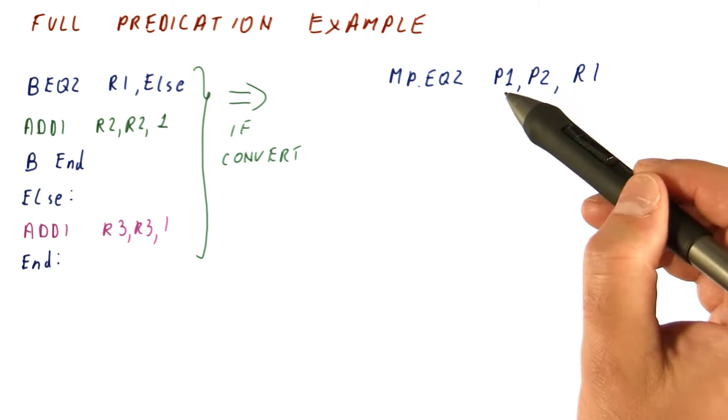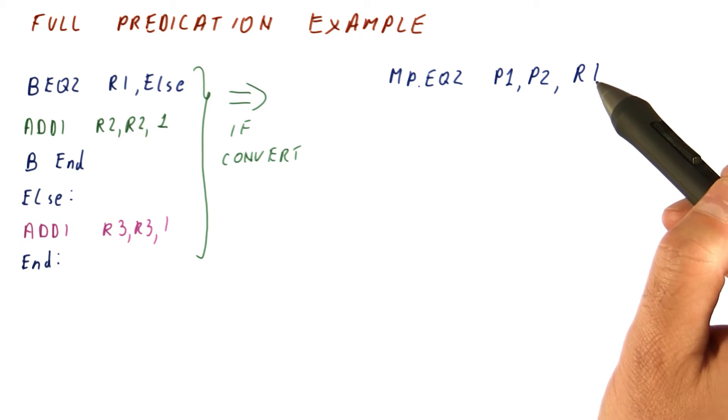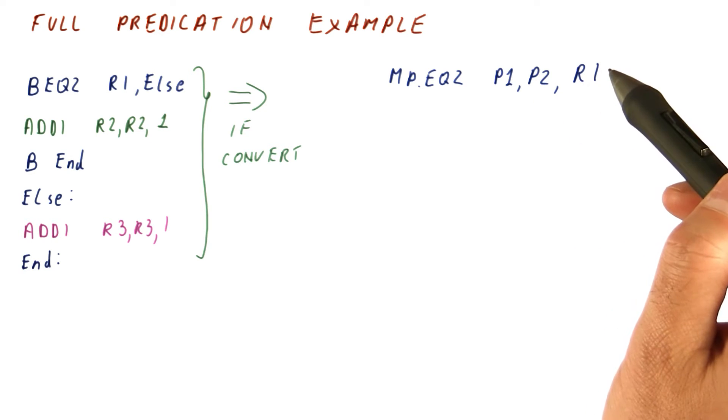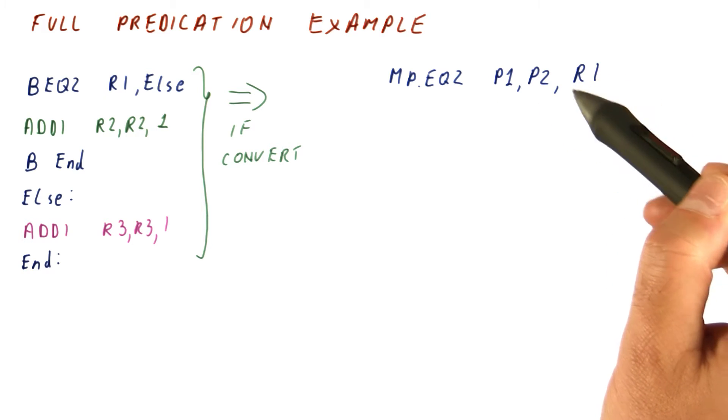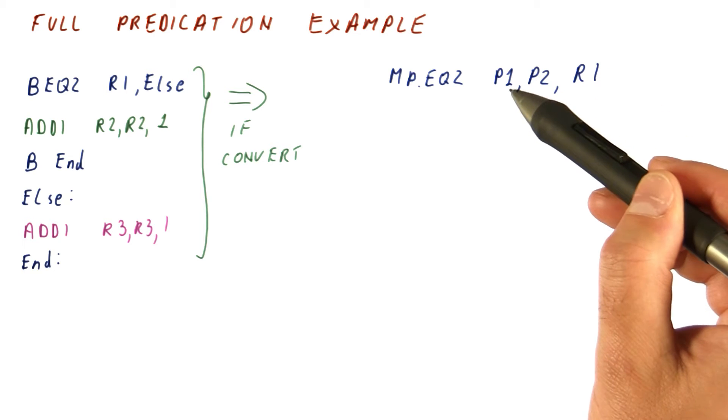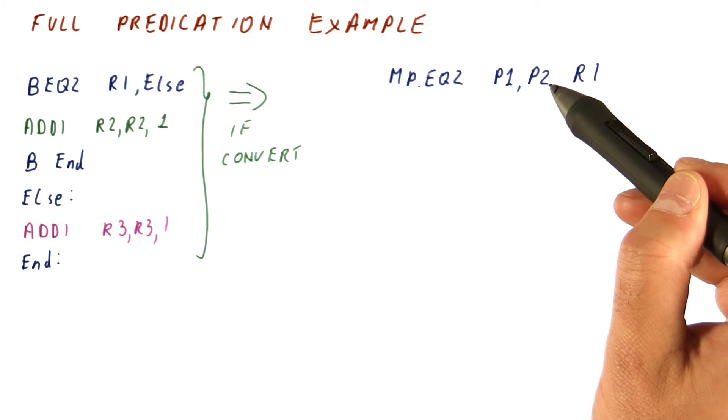The predicates are always set opposite of each other so that if R1 is 0, P1 is set to true and P2 to false. If R1 is not equal to 0, then P1 is set to false and P2 is set to true.